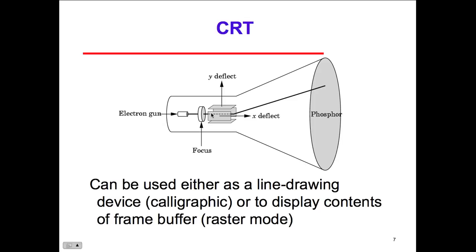The CRT — cathode ray tube — can be used either as a line drawing device, or in calligraphic mode. Tube technology was the original technology. It's old, but it works. As a line drawing device it basically created images with lines.